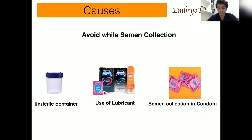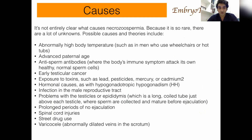What are the causes of necrozoospermia? One thing to avoid during semen collection is using an unsterile container, lubricants, or condoms — they all contain toxins that kill sperm. Other causes include high body temperature, advanced paternal age, anti-sperm antibodies, early testicular cancer, exposure to toxins, hormonal causes, infection in the male reproductive tract, problems with the testicles, prolonged period of no ejaculation, spinal cord injuries, street drug use, and varicocele.